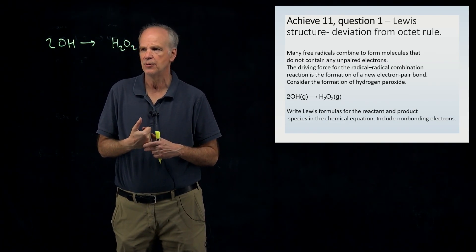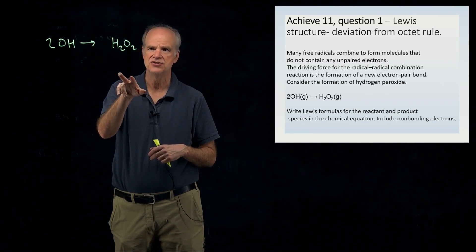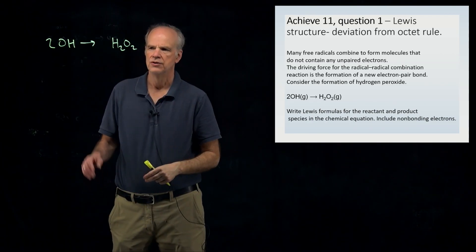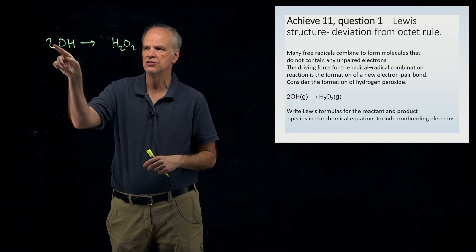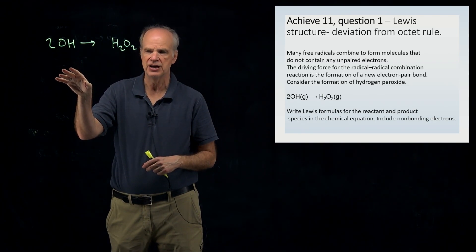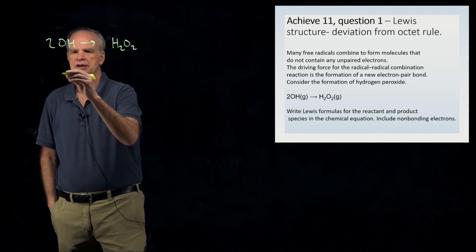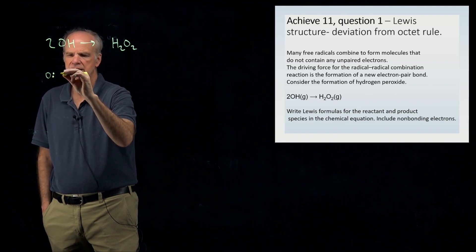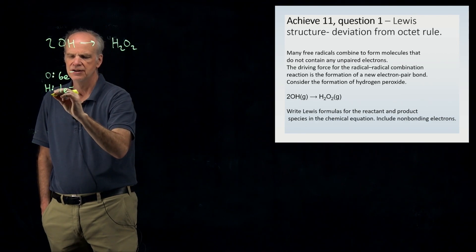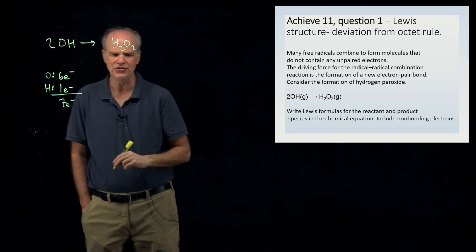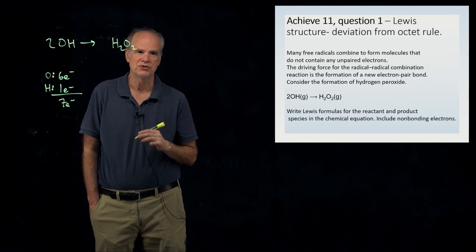What the problem wants is for you to write correct Lewis structures for the hydroxyl radical and hydrogen peroxide. For the hydroxyl radical, even though the equation says 2OH, let's draw a Lewis structure for just one OH. Oxygen has six valence electrons and hydrogen has one, giving us seven total valence electrons — an odd number.